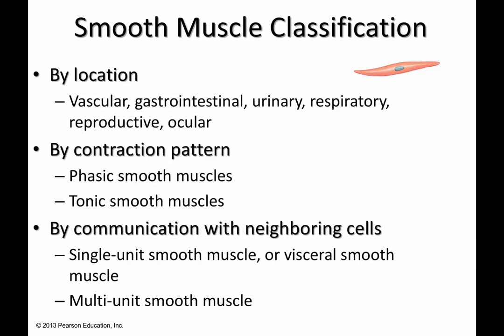You can classify smooth muscle by its contraction pattern, whether it is phasic or tonic. By phasic, we mean a muscle that stays relaxed most of the time and occasionally contracts. By tonic, we mean a muscle that holds tension most of the time and occasionally relaxes. You can also classify smooth muscle by how it communicates with its neighboring cells — either single unit, as found in most of the visceral smooth muscle, or multi-unit, which is found in selected cases.